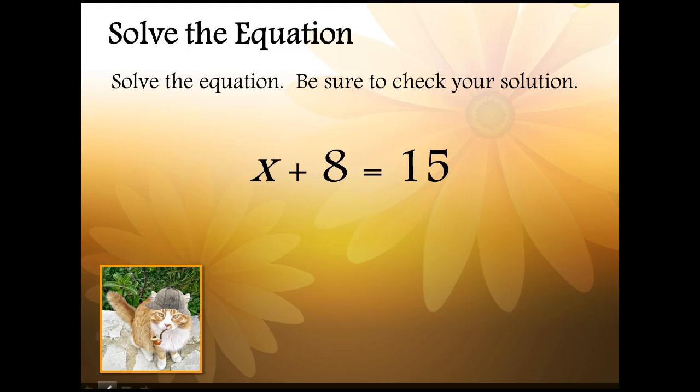This equation may be easy to solve in your head. However we are focusing on the process or the algorithm for solving equations. To solve the equation we're going to apply the subtraction property of equality. The first step in solving any equation is to find the variable. That is the side of the equation that you start with. Then you need to isolate the variable.